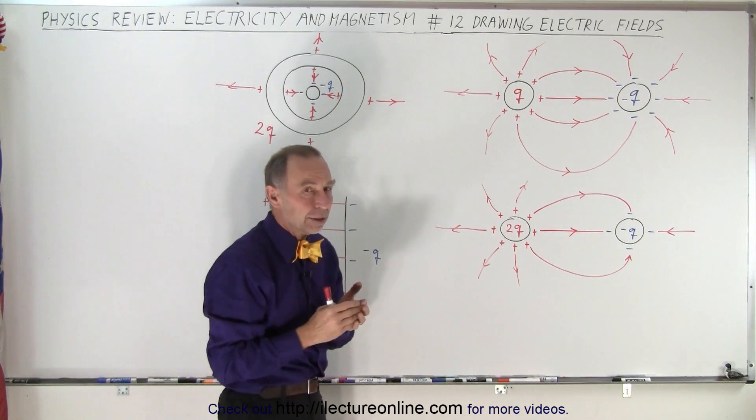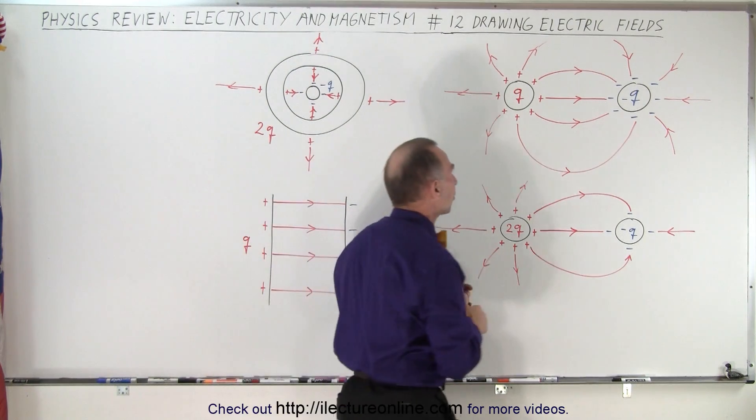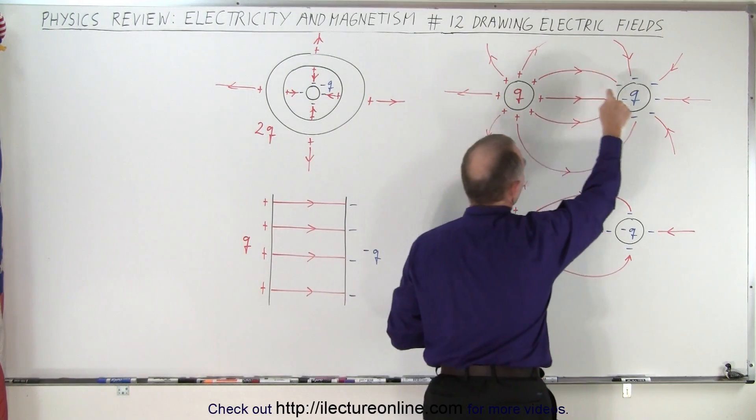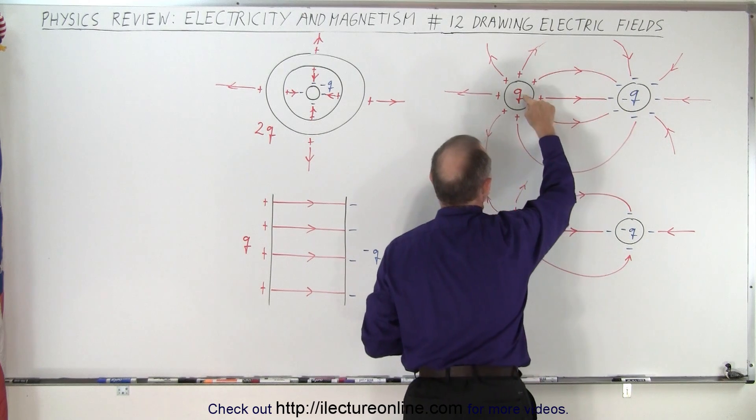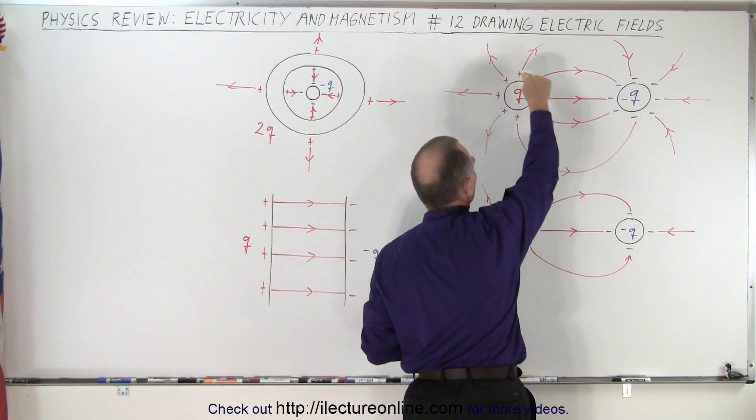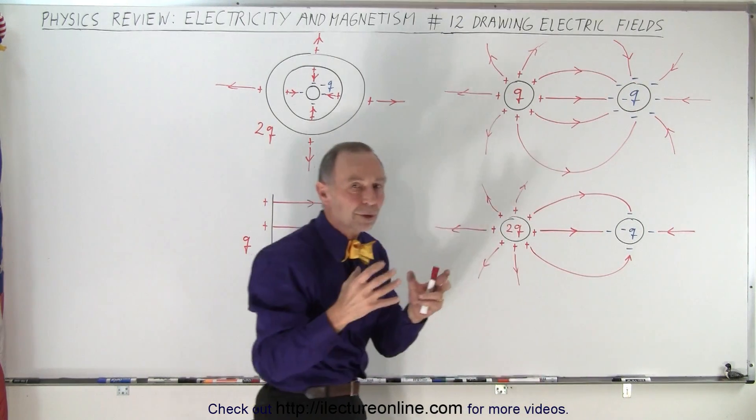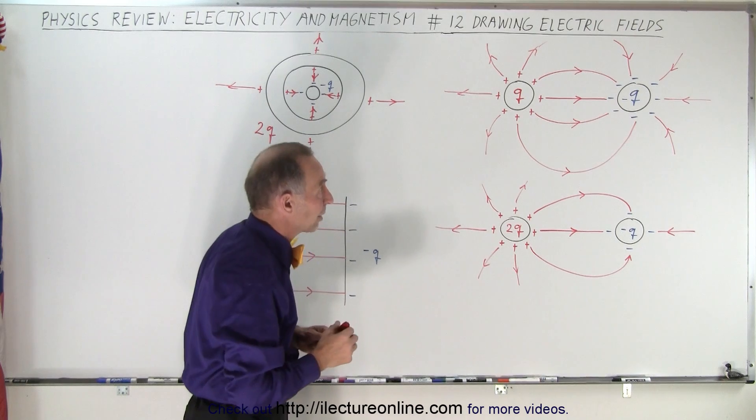The amount of lines that you draw are not really that important. It's just the ratio between the two objects. So if the two objects have the same amount of charge, and one is positive and one is negative, then you want to draw the same number of positive charges and negative charges. You want the number to be the same, but the amount doesn't really matter.